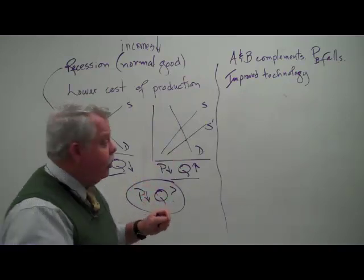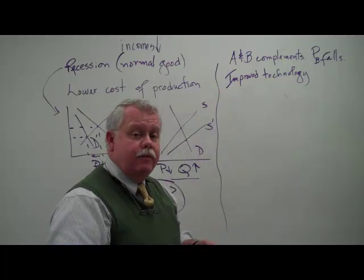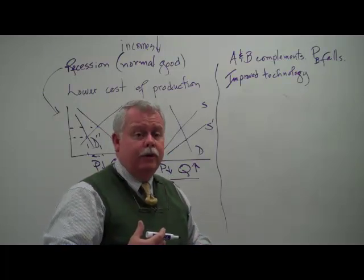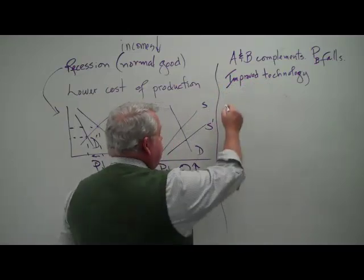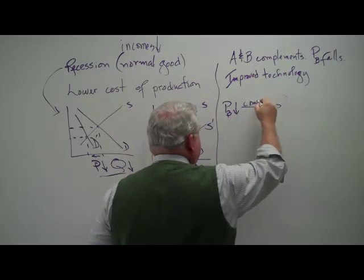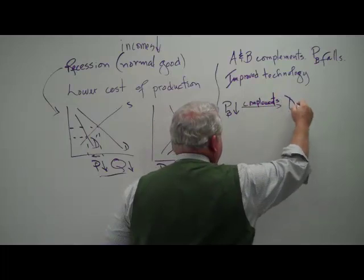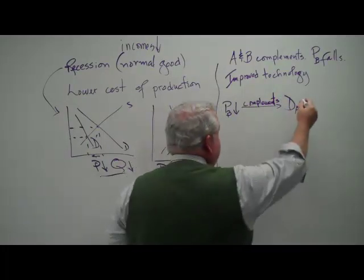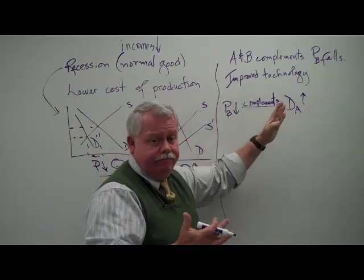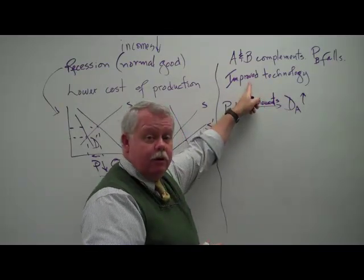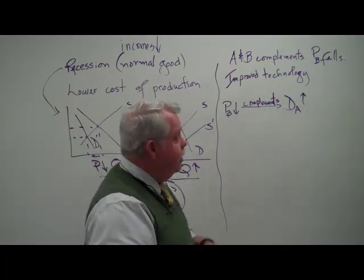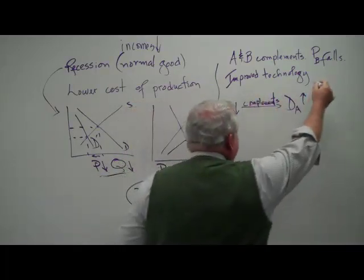Let's do another example. We have two goods that are complements, A and B. When we see the word complements, we should be thinking about the demand curve. A and B are complements and the price of B falls. When the price of B falls and we're dealing with complements, the demand for A — the complementary good — is going to increase. If peanut butter gets cheaper, we're going to buy more of it and we're going to need more jelly to go with it. So we have an increase in demand. Also, improved technology will increase supply — it makes it cheaper to produce. So we have both an increase in demand and an increase in supply.